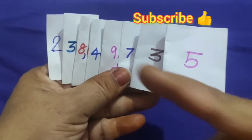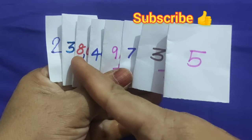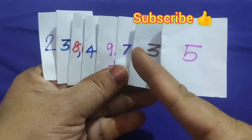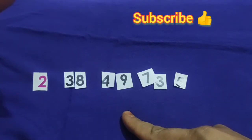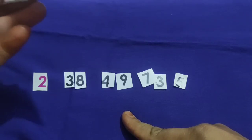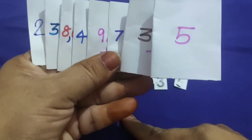Now, this is short form: 2 crore 38 lakhs 49 thousand 735. Which number? We have written on the down side, the same number. This is short form.